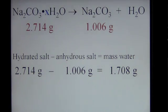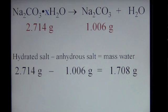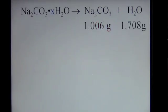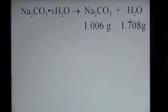Now that we have the mass of the anhydrous salt and the mass of the water that was liberated, we can simply set up a ratio between the two to figure out how many water molecules were initially embedded within that crystal lattice structure of the salt. To compare the water to the salt, we need to be in the right unit, and that unit happens to be moles. So we're going to take the 1.006 grams of anhydrous sodium carbonate and the amount of water liberated and change these units to moles.